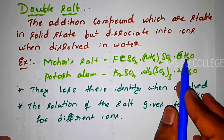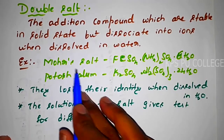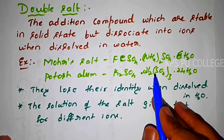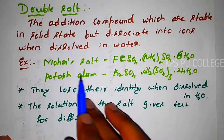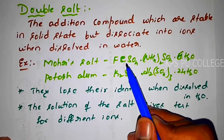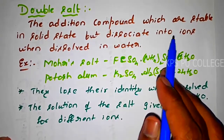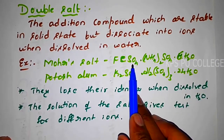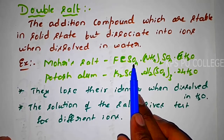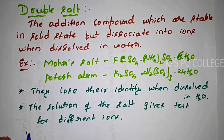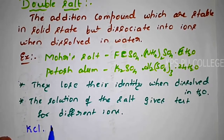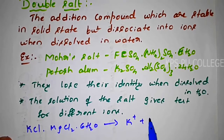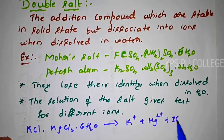Examples of double salts are: ferrous ammonium sulfate (called Mohr's salt), and potassium aluminum sulfate — K2SO4·Al2(SO4)3·24H2O (alum). For carnalite, KCl·MgCl2·6H2O, when dissolved in water it dissociates into K+, Mg2+, 3Cl−, and 6H2O.